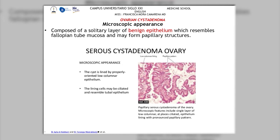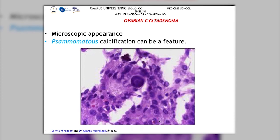When we talk about the microscopic appearance, we will describe a solitary layer of benign epithelium that resembles the fallopian tube mucosa and may form papillary structures. We can find the single layer of epithelium lining with a papillary pattern. We can also find psammomatous calcification, which is a feature we should look for.